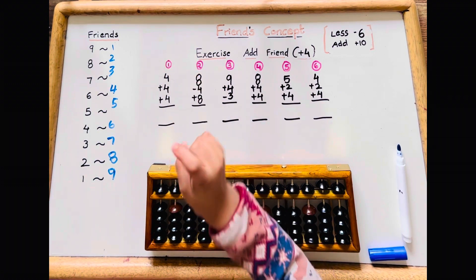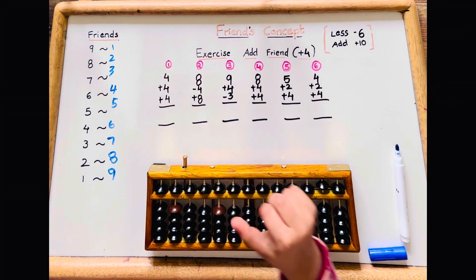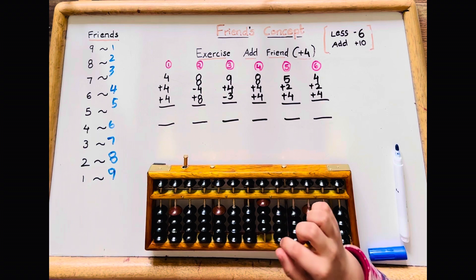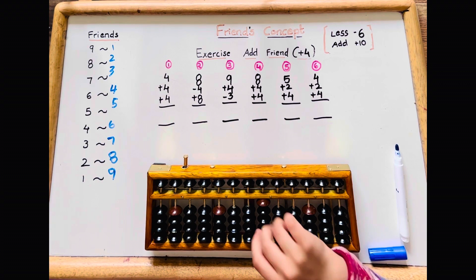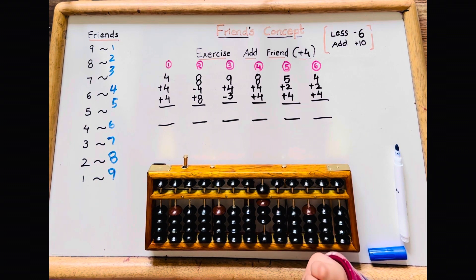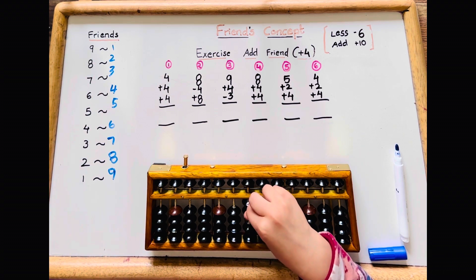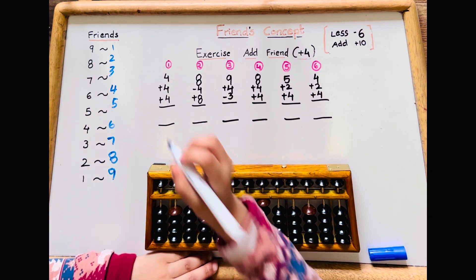Let's do the first sum: 4 plus 4 plus 4. 4 plus 4 — there's no plus 4, so minus 1 add 5. Then there's no plus 4 again, so minus 6 add 10. The answer is 12.